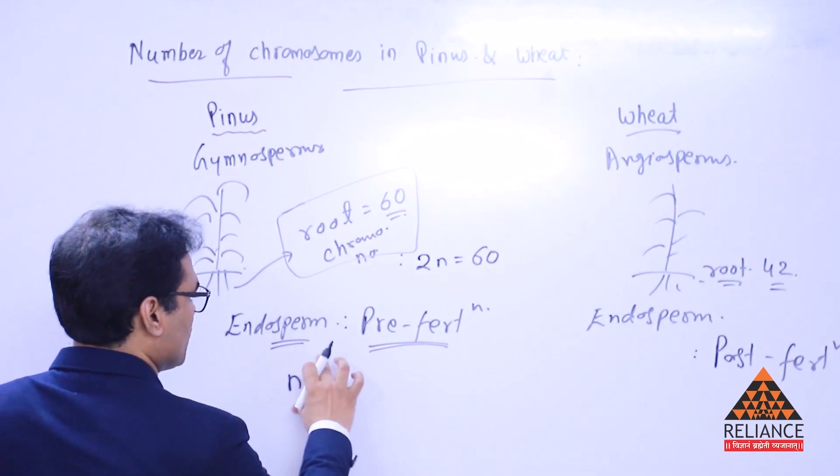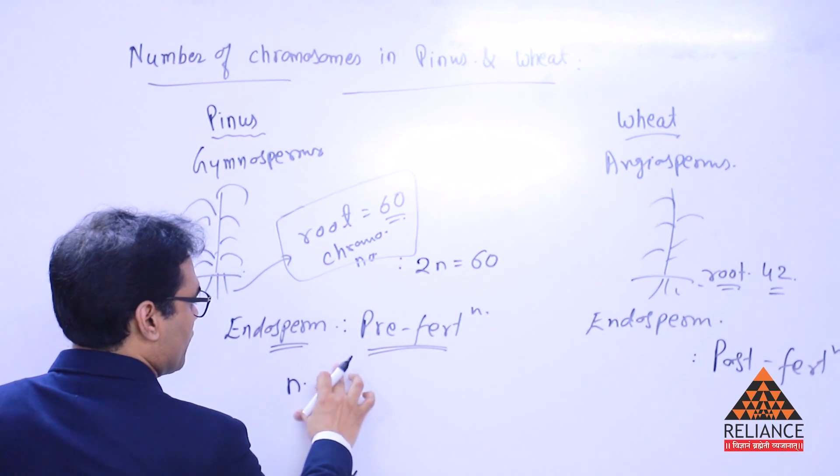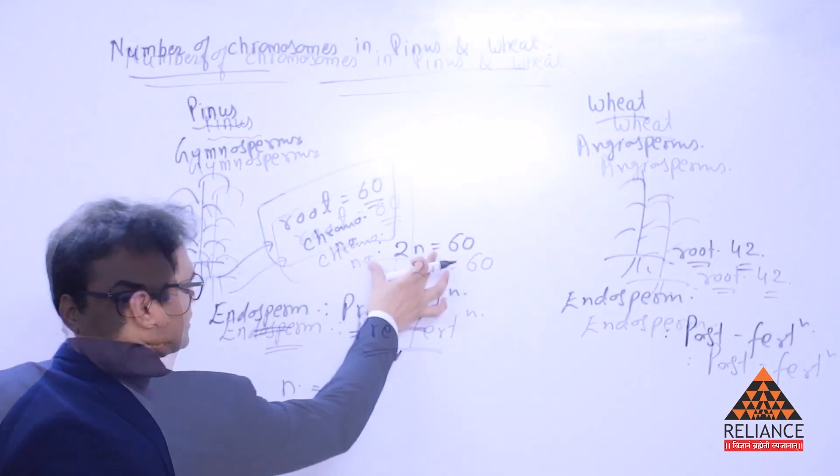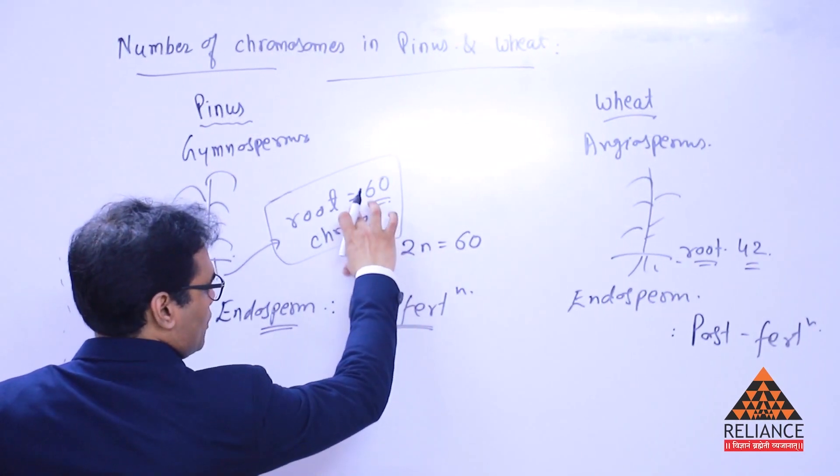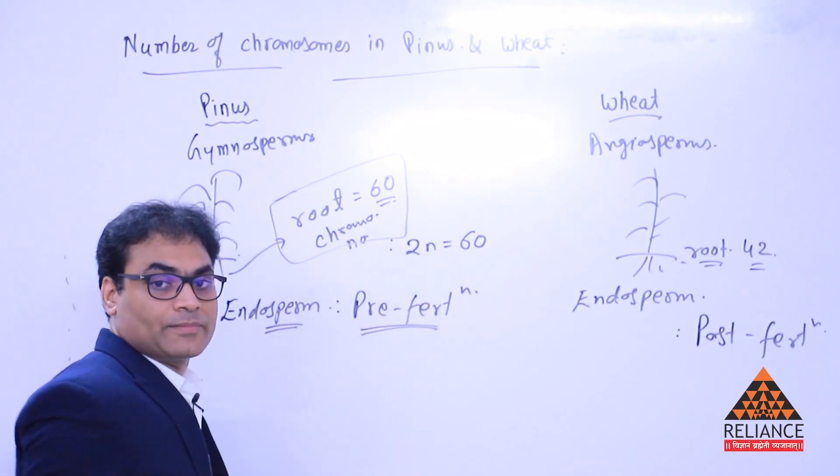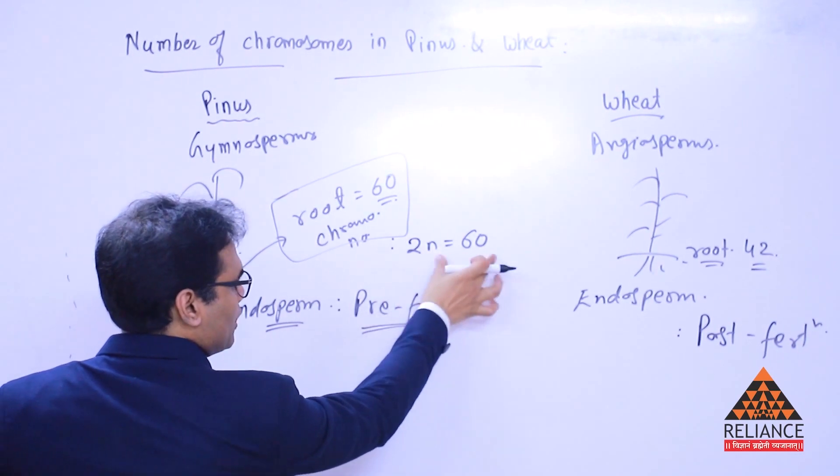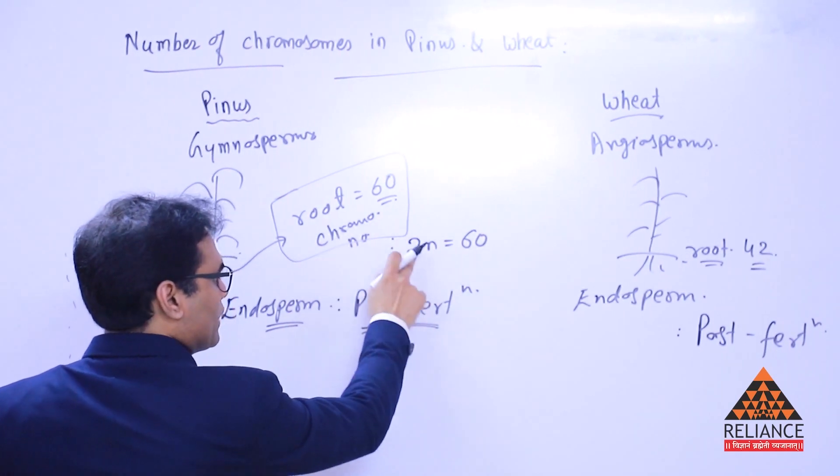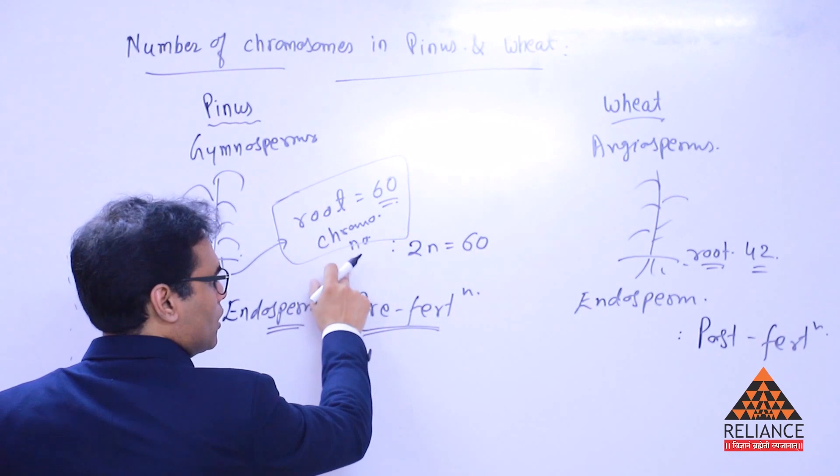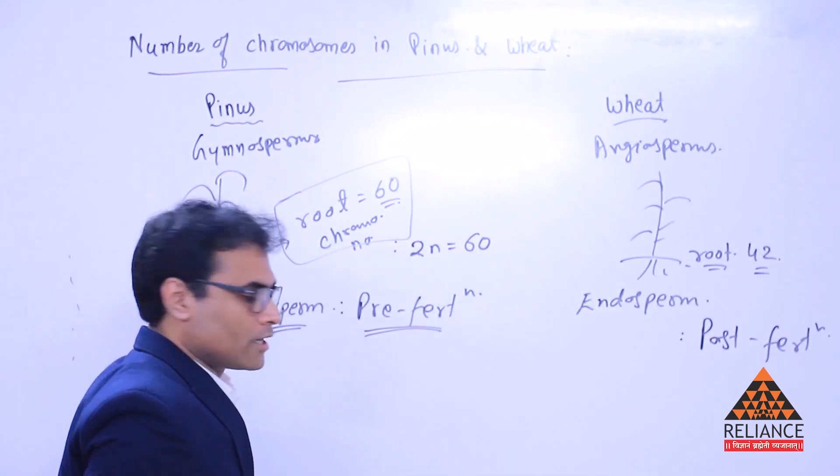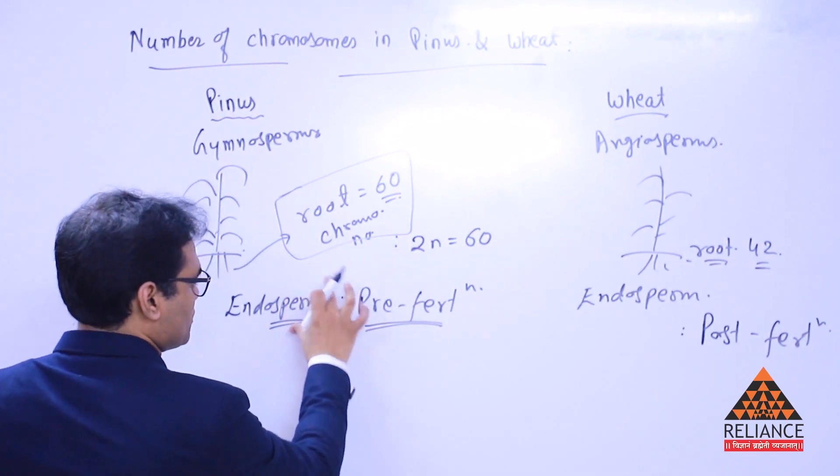So, you can very easily find out the number of chromosomes present inside. As you can see, the 2N, the root chromosomes, the root cells are the typical diploid cells. So, these diploid cells in Pinus are having the total number of chromosomes as 60. Because the 2N is given to you, that's the root chromosome, total 60.